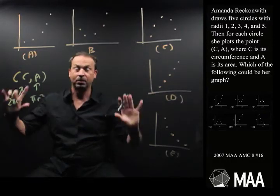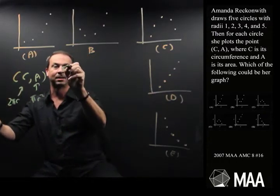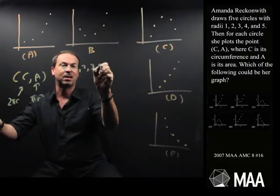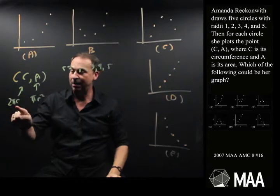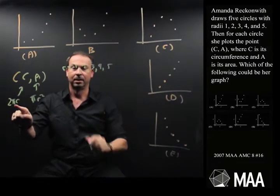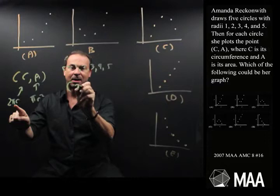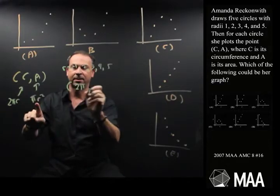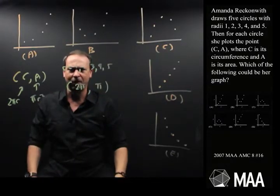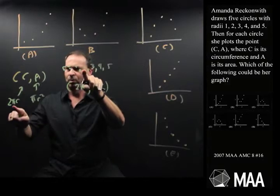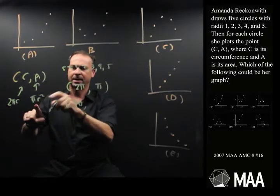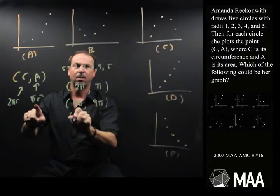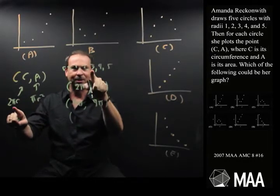She does this with five circles. So she has radius 1, radius 2, radius 3, radius 4, radius 5. So I could actually write down what the five points are. For example, for radius 1, C is 2 pi r, 2 times pi times 1, comma pi r squared, pi. That's her first point. For radius 2, she'll get the point 2 pi r, 4 pi, pi r squared, 4 pi. Radius 3, I might as well keep going because I don't really know what else to do right now.